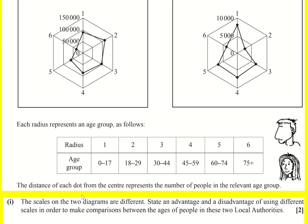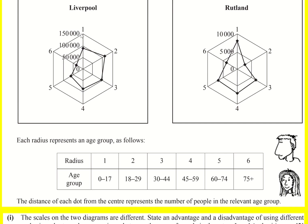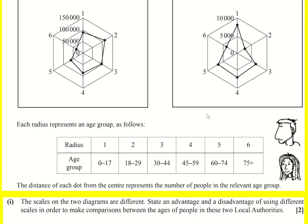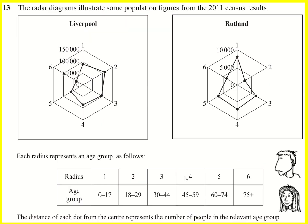We're told the scales on the two diagrams are different — as we can see, the numbers are going up by different amounts. The question asks us to state an advantage and a disadvantage of using different scales in order to make comparisons between the ages of people in these two local authorities.